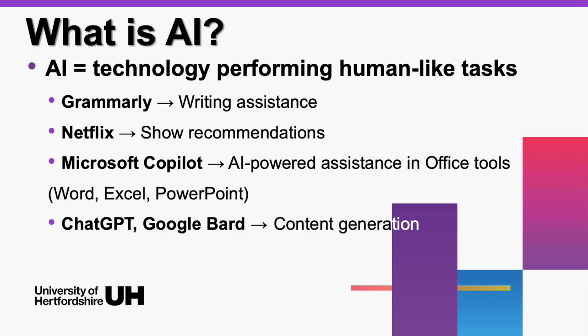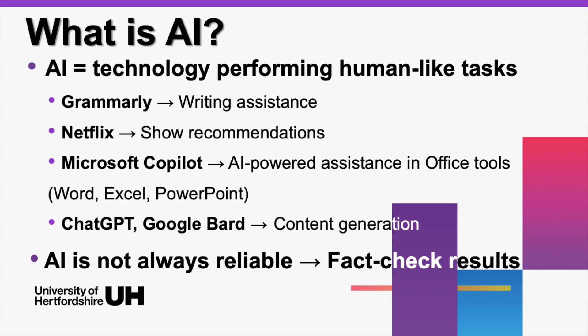There's also generative AI, like ChatGPT and Google Bard, which create content based on what you ask them. Sounds cool, right? But here's the catch — AI isn't perfect. It sometimes makes stuff up, or gets things wrong. Ever had autocorrect turn your text into complete nonsense? Yeah, imagine that, but on an academic paper. That's why we need to be smart about how we use it.